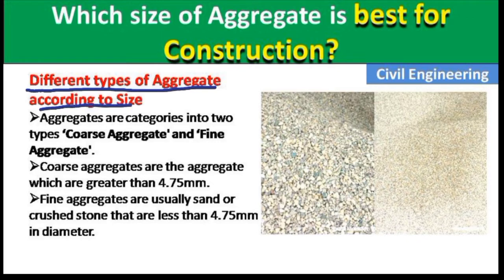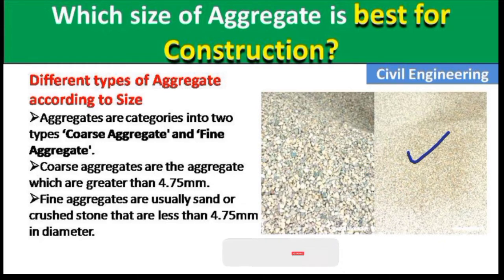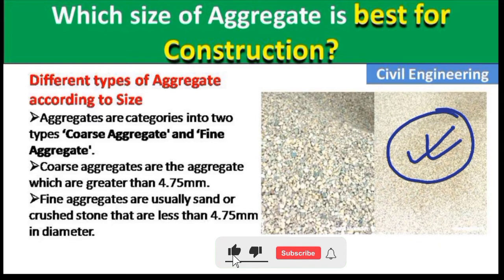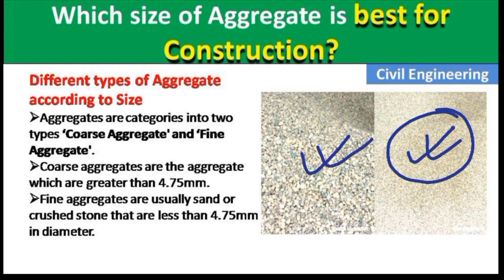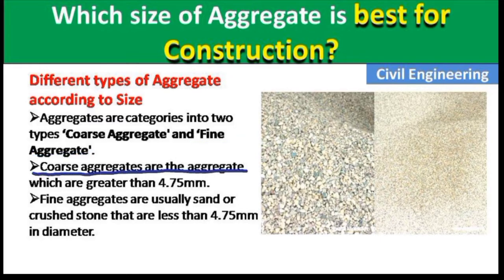You can see here this is aggregate, and this is also known as aggregate but we call it sand. Sand is also aggregate but it has a smaller size than coarse aggregate. Aggregates are categorized into two types: one is coarse aggregate and the other is fine aggregate.